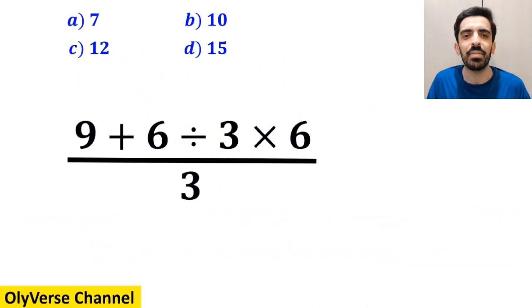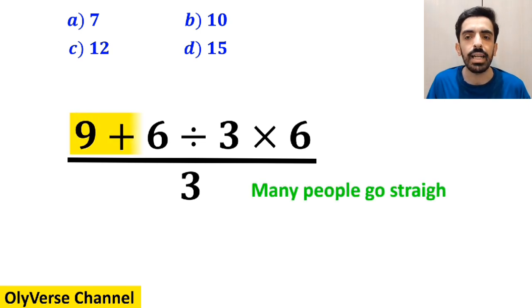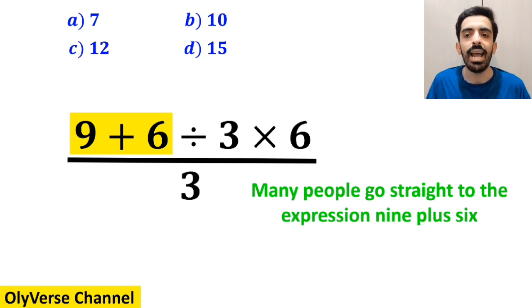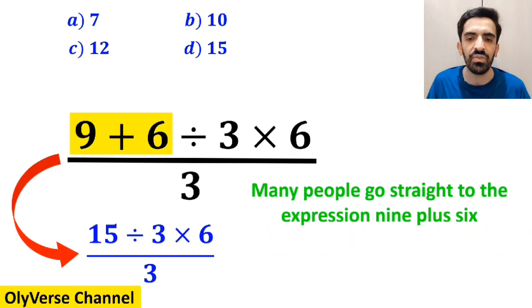Let's dive in and break it down step by step together. In the first step to solve this question, many people go straight to the expression 9 plus 6 in the numerator of this fraction and replace the whole expression with 15 divided by 3 times 6 over 3.